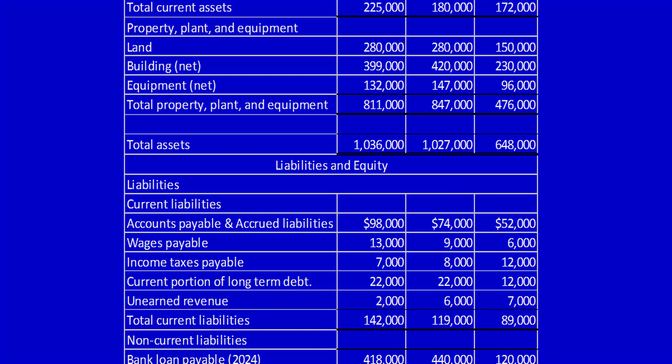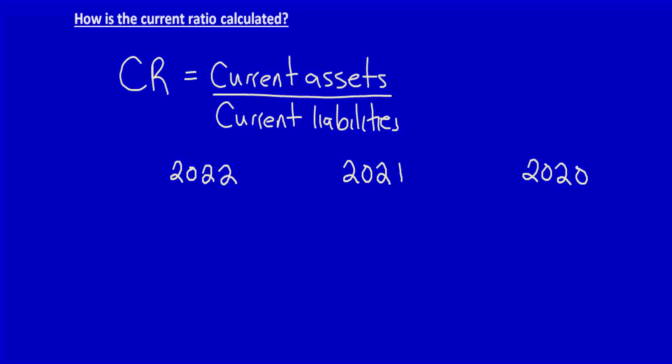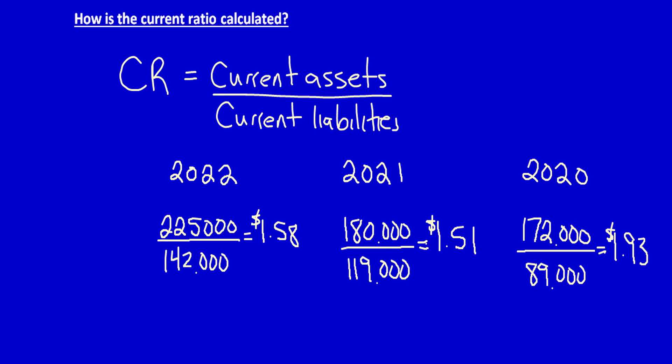Let's do the calculations. Remember we're going to take the current assets for each year and divide it by the current liabilities based on the statement of financial position from Orange Inc. In 2022 the current ratio is $1.58. In 2021 the current ratio is $1.51. In 2020 the current ratio is $1.93.